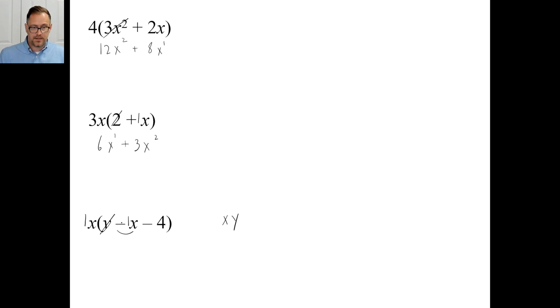Okay, so I have a 1 times a negative 1. That's negative 1, right? 1 times negative 1. x to the first times x to the first is x to the second. You can write the 1 here if you want to, or not. Whatever. You're done. Okay? What's x times negative 4? Well, that's negative 4x. And that's all you can do.